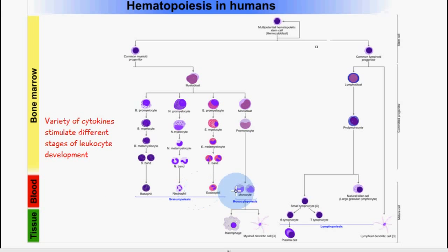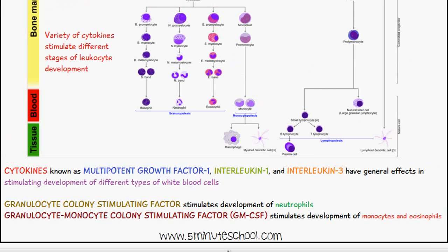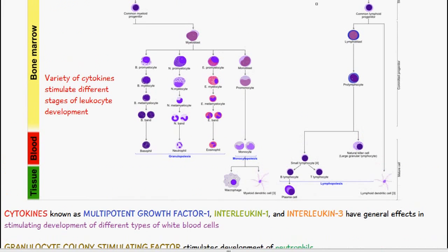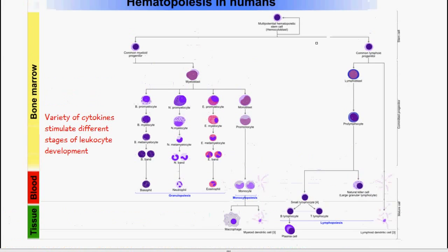We also have production of a monocyte, via the process called monocytopoiesis. From the myeloblast we have the monoblast, then the pro-monocyte, then the monocyte. From there it can differentiate into a macrophage or a myeloid dendritic cell.